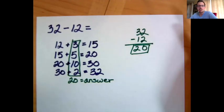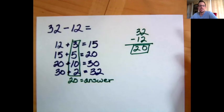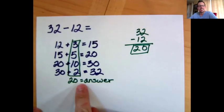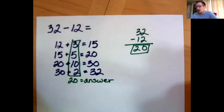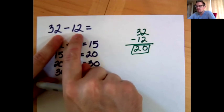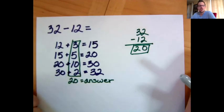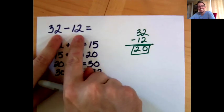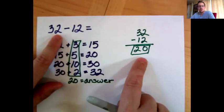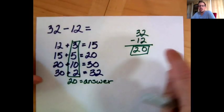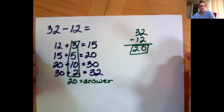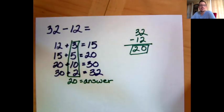Let's start with 32 minus 12. The obvious point: the old method is easier for this problem — it absolutely is. The reason the old method is easier here is because the ones digits are the same. This is a really easy subtraction problem even without writing it down. I imagine 90 percent of you would not need a piece of paper for this, because when the ones digits are the same, the problem ends with a zero, so all you do is subtract the tens digits.